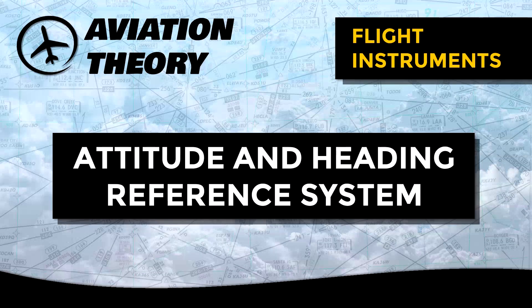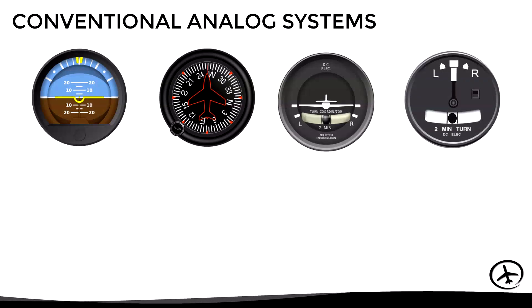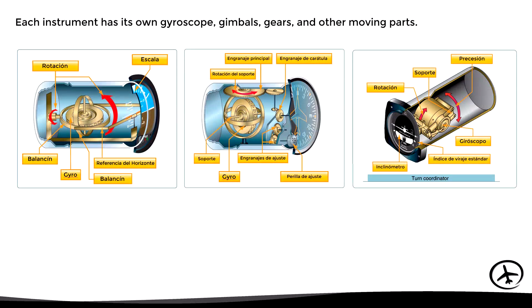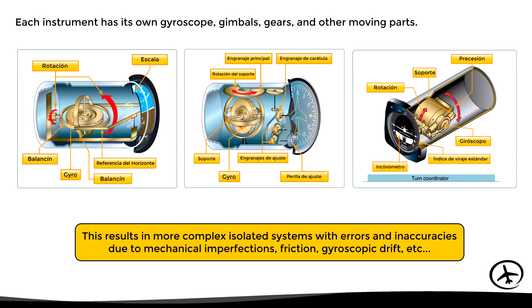Today we will talk about the Attitude and Heading Reference System, which, like the air data computer, has helped the transition from conventional analog instruments to new digital systems. Before going into detail with this system, we must see how conventional analog instruments work. In the case of gyroscopic instruments, each one has its own gyroscope specifically designed to measure a certain parameter, meaning each instrument has its own gyro, gimbals, gears, and other moving parts, resulting in more complex isolated systems with errors and inaccuracies due to mechanical imperfections, friction, and gyroscopic drift, among others.